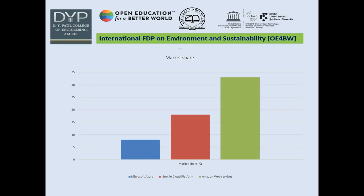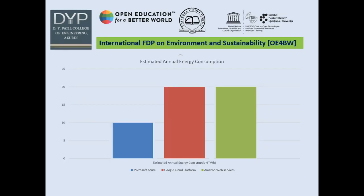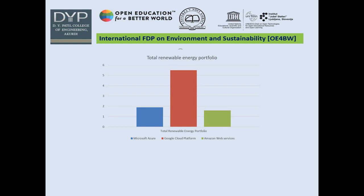Moving on to Amazon Web Services — they hold the largest market share at 33%. They have claimed to reach sustainability for cloud operations by reaching a 50% share in renewable energy, but some reports also say that only 12% of AWS's largest data center is powered by renewable energy. In terms of graphs, the estimated annual energy consumption is 10 terawatts for Microsoft Azure, and different values for Google Cloud and AWS in 2020. For total renewable energy portfolio, the values are 1.9 gigawatts for Microsoft, 5.5 gigawatts for Google Cloud Platform, and 1.6 gigawatts for AWS.